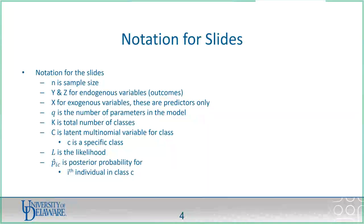Just quickly on notation: Y and Z are endogenous variables — their outcomes are predicted by another variable in the model. X is for exogenous variables — predictors only. Q is the total number of parameters, K is the total number of classes, C is the latent variable that follows a multinomial distribution for class, and little c is the specific class in an equation. L is the likelihood. P-hat is the posterior probability, and P-hat IC is the posterior probability for the i-th individual in class c.